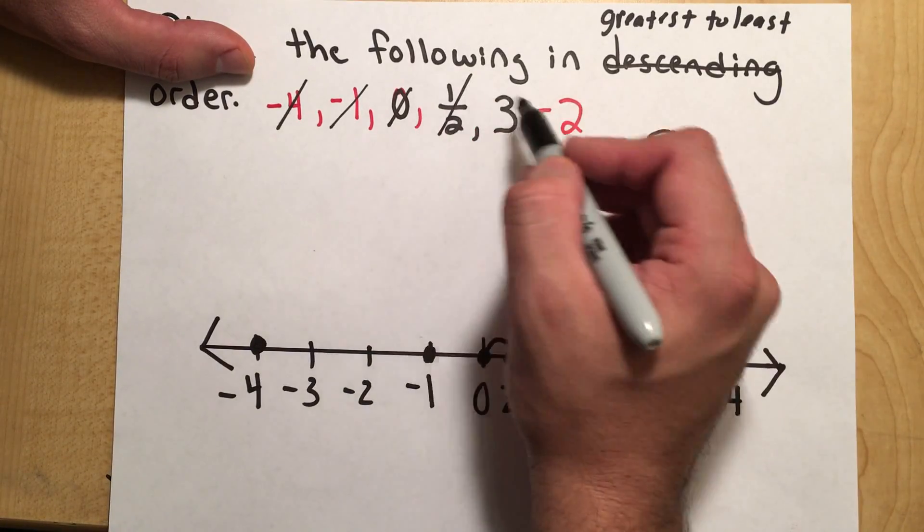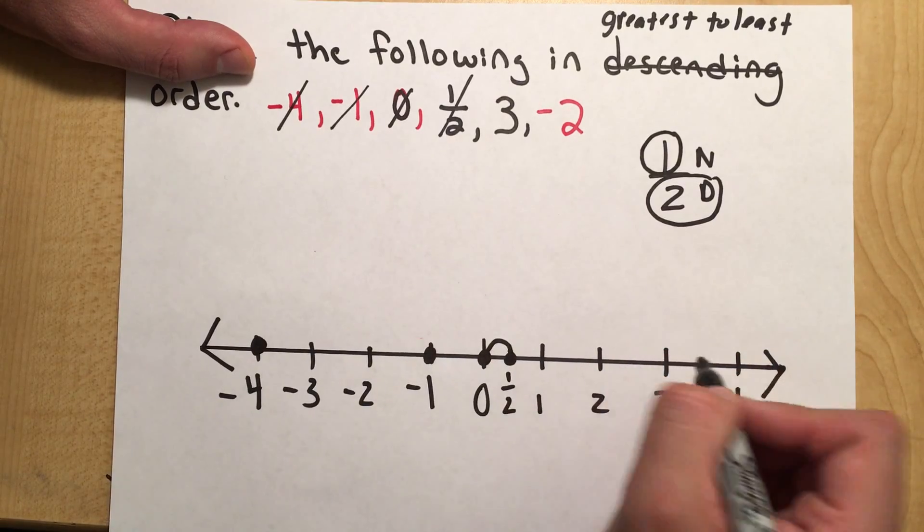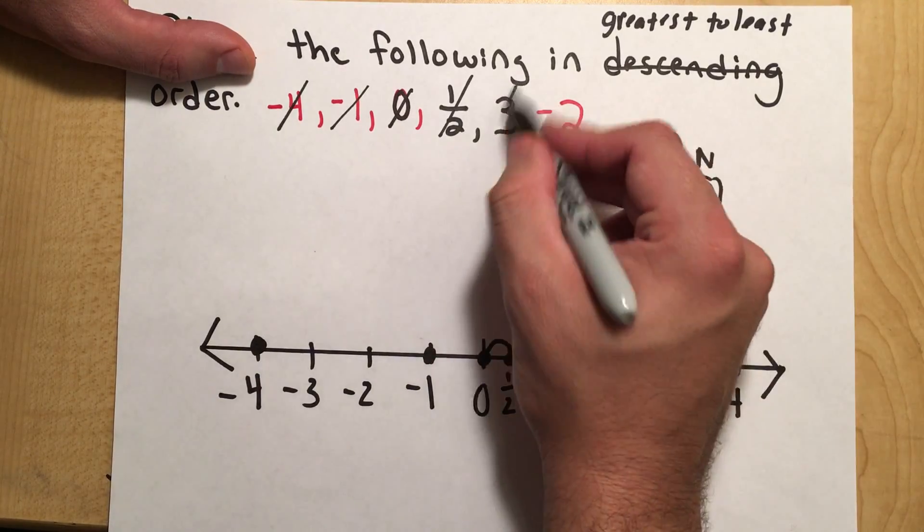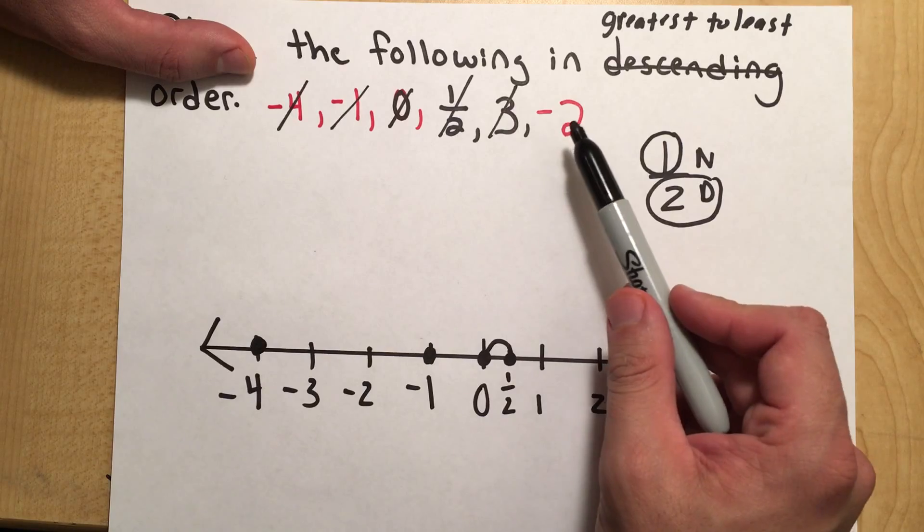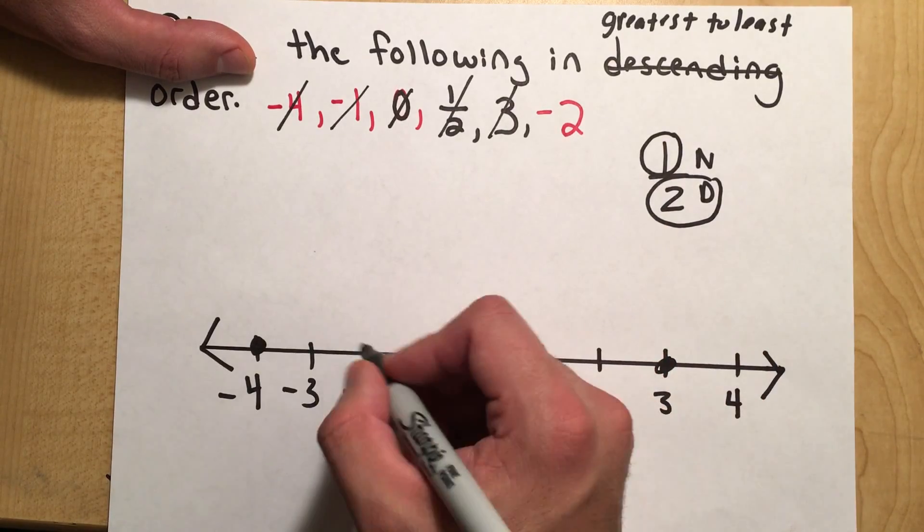And our next number is positive 3. That's 1, 2, 3. And last but not least, negative 2. That's negative 1, negative 2.